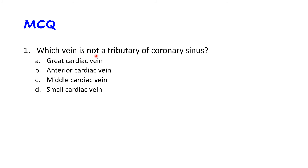MCQ: Which vein is NOT a tributary of the coronary sinus? Options: great cardiac vein, anterior cardiac vein, middle cardiac vein, small cardiac vein. The great cardiac vein is a tributary. The anterior cardiac veins directly open into the right atrium, so they are not tributaries of the coronary sinus — this is the correct answer. Middle and small cardiac veins are tributaries. Note: venae cordis minimae also do not open into the coronary sinus.